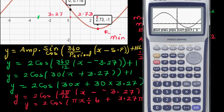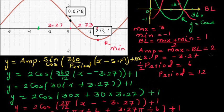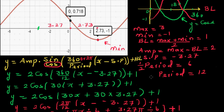The maximum, y-intercept, and minimum all confirm the equation is correct. To recap: the general equation is y equals amplitude times sin or cos — generally cosine, because you start from the maximum or minimum. If starting from the minimum, it becomes minus cosine. The formula is amplitude times cos of (360 or 2 pi divided by the period) times (x minus the starting point) plus the baseline.